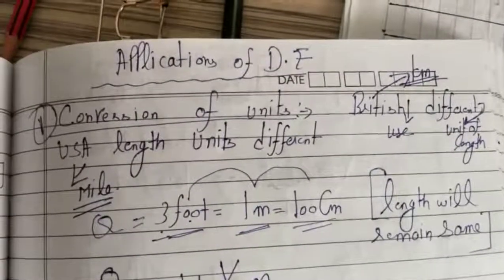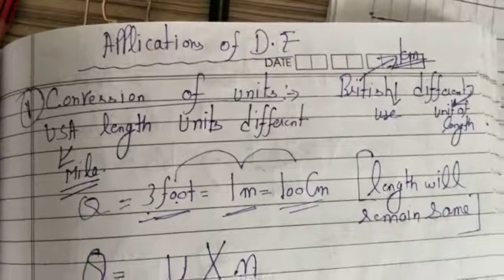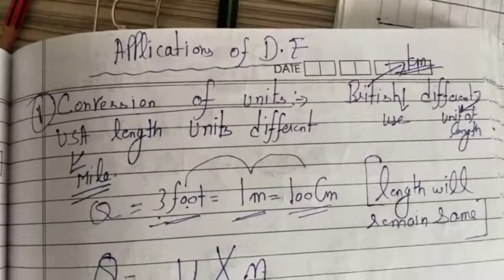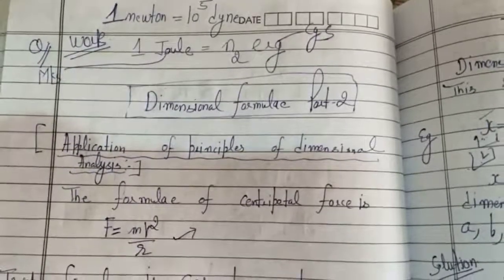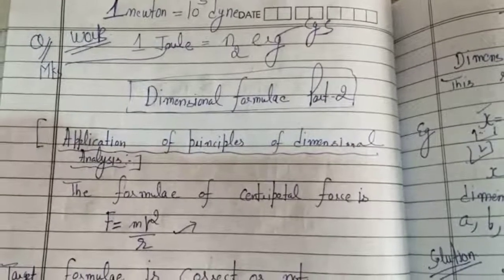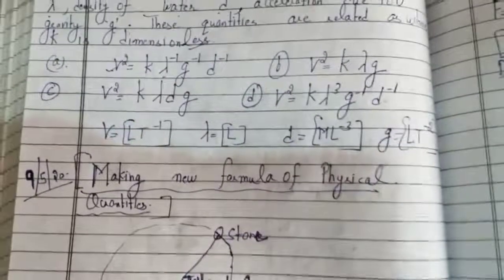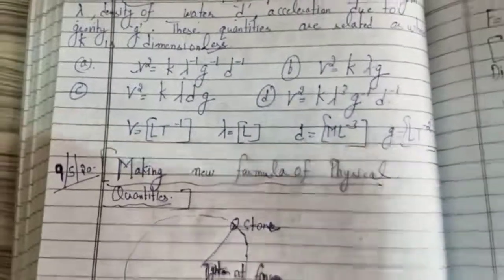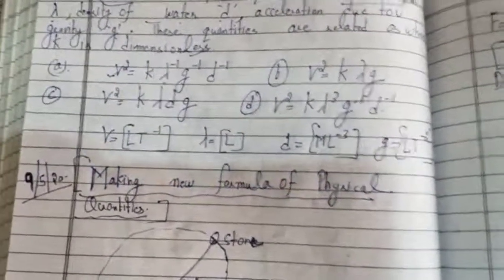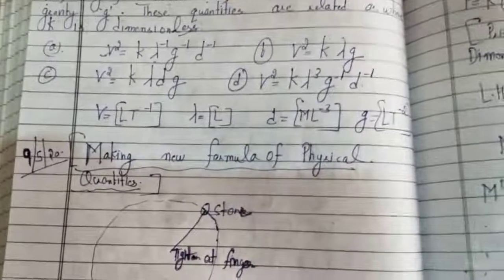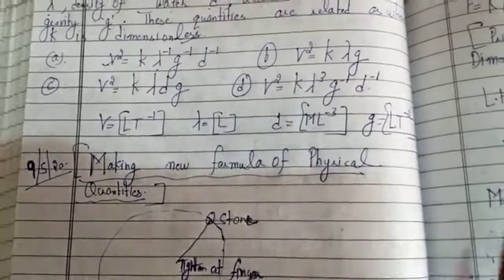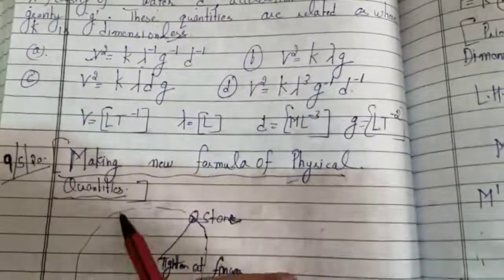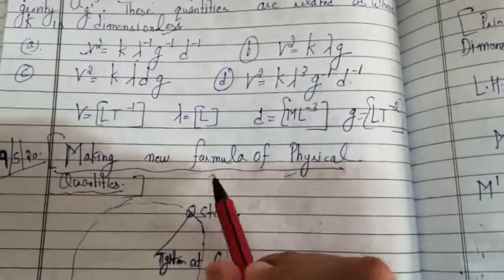Good morning students. We will be continuing with our next lecture on applications of dimensional formula. Previously we discussed the first application, conversion of units, and the second application, verifying whether a formula is correct. Today we will discuss the third application: making new formulas of physical quantities using dimensional analysis.